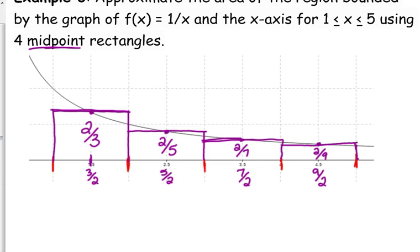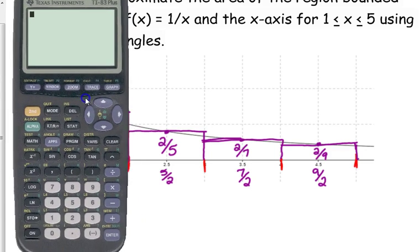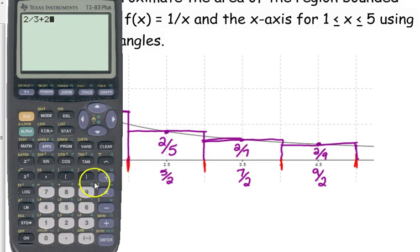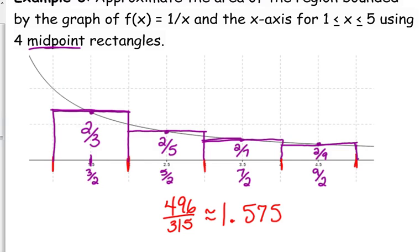So I'm not going to lie, I could get a common denominator, but I'm not going to. I'm just going to use my calculator on this one. What was the first one? 2 thirds. 2 thirds plus 2 fifths plus 2 sevenths plus 2 ninths. 496 over 315, which is approximately 1.575 for the area under that curve. Now, that's closer to the actual area under the curve. It's still not there exactly, but that's pretty darn close.